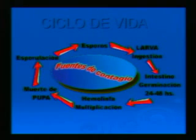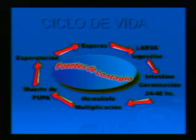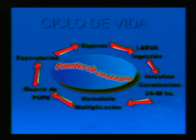El ciclo de vida: las esporas son ingeridas por las larvas, ingresan al intestino, germinan, se produce la multiplicación en el intestino, pasa a hemolinfa, se multiplica en la hemolinfa, esto produce la muerte de la pupa, la esporulación, donde se genera gran cantidad de esporas nuevas y así se reinicia el ciclo en otra larva.